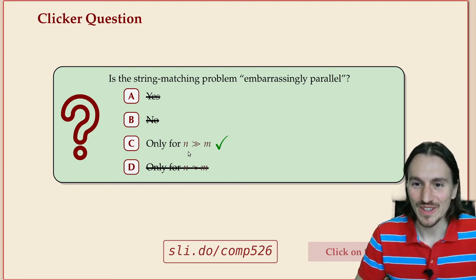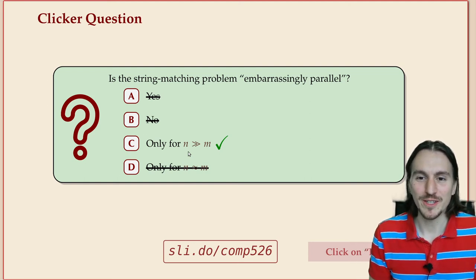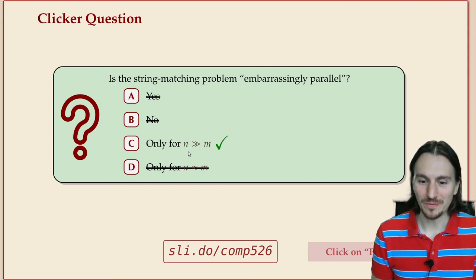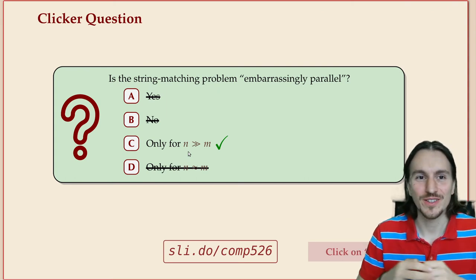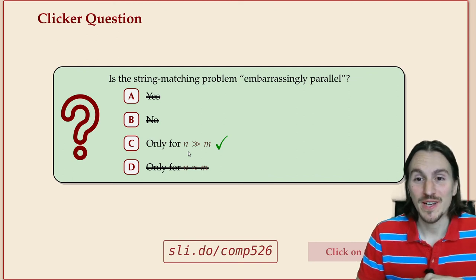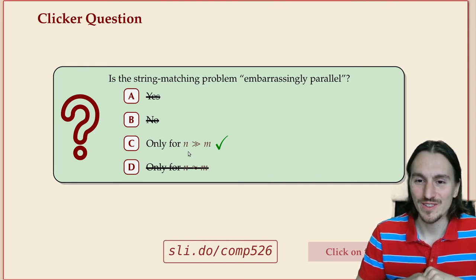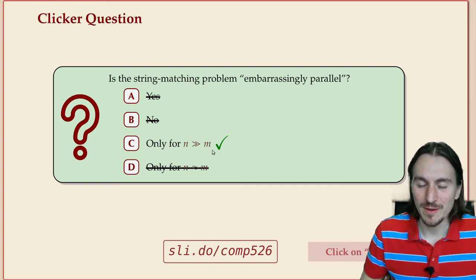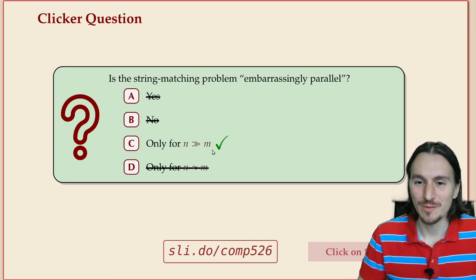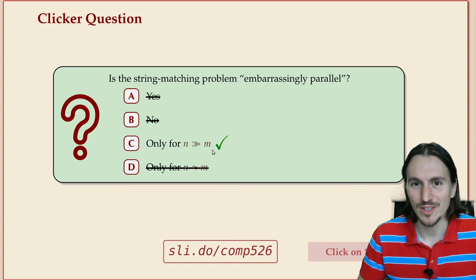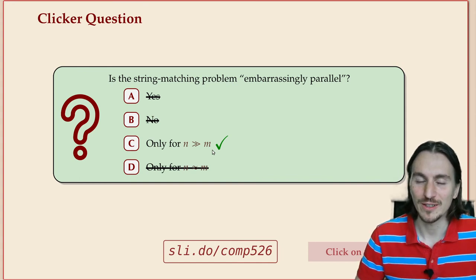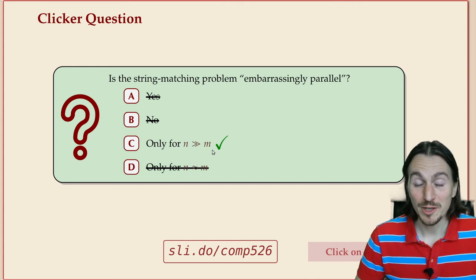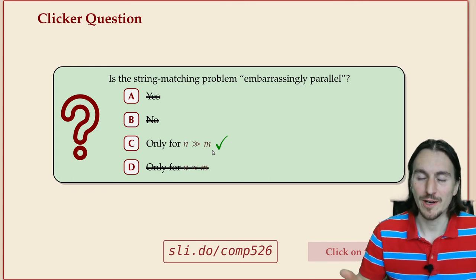All right, looks good. Yeah, you're absolutely right. The string matching problem is embarrassingly parallel in this sense that you can find many small independent subproblems, but only if the pattern is small. The reason is just if the subtasks are checking one guess, then you only have n minus m of these. If m is roughly the same as n, then there's not so many subtasks, whereas each of the subtasks is still a fairly big problem. But if the pattern is very small, we don't really have to work hard. If the pattern is really small, it might be good enough to just check all the guesses in parallel.